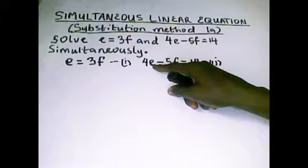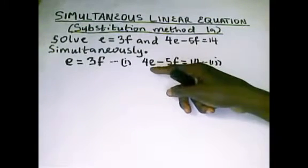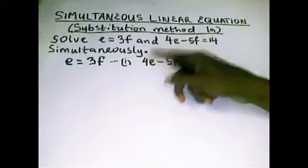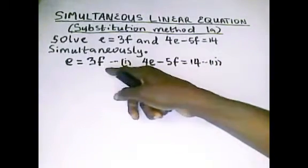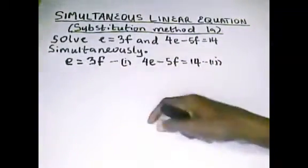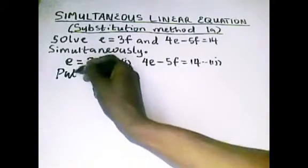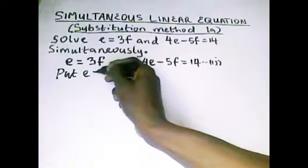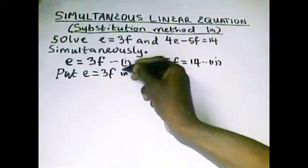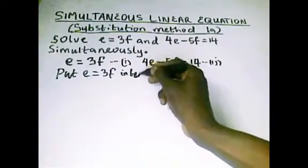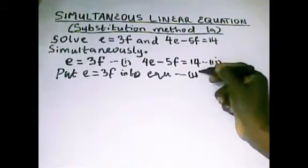That is substitution method. Substitution method means you take the value of one away and replace it with something that is equivalent. So e equals 3f. What's the next step? We say put e equals 3f into equation 2.